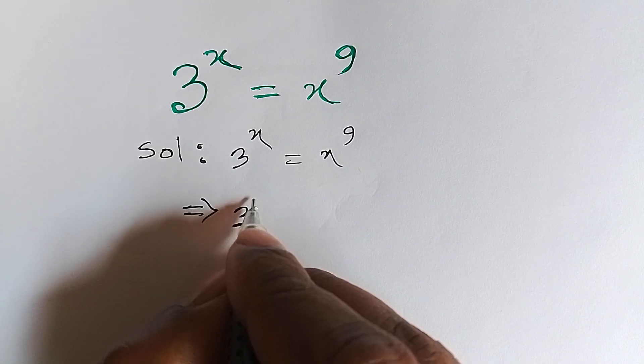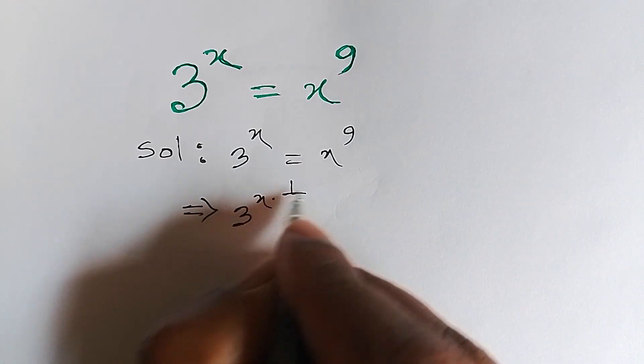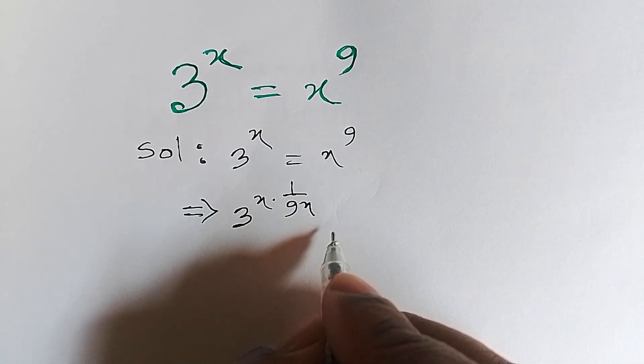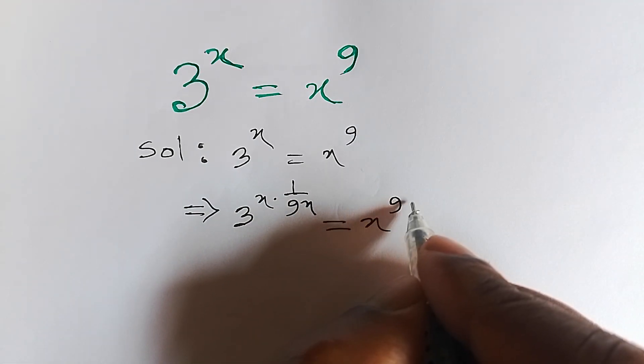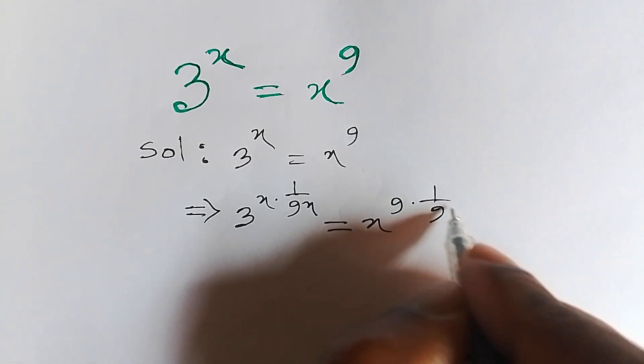It will remain 3 to the power x times 1 over 9x equals x to the power 9 times 1 over 9x.